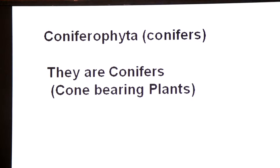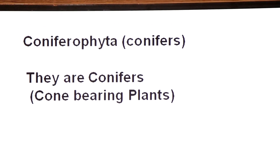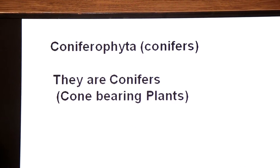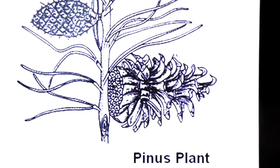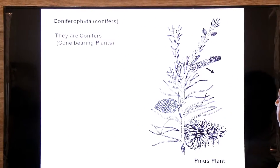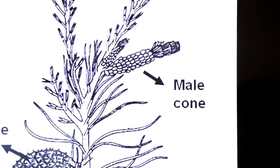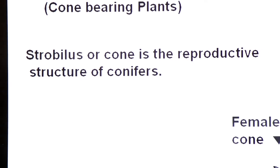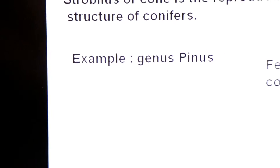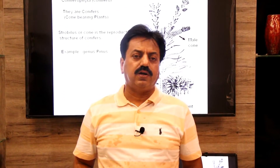Aur sab se last mein discuss karte hain Coniferophyta — conifers. They are cone-bearing plants; cones are the reproductive organs. This is the diagram showing Pinus — monoecious — having male cone and female cone on the same plant on different branches. Strobilus or cone is the reproductive structure of conifers. Example: genus Pinus. Today we have covered all 4 divisions. Tomorrow I will be with you to discuss the life cycle of pinus plant. Thank you dear students, wish you all the best.